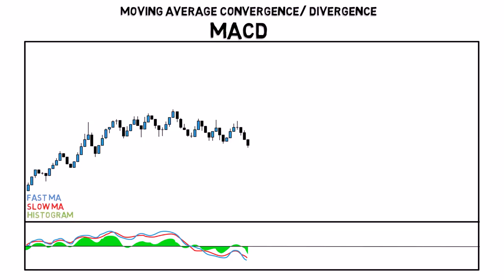A histogram that shows the difference between the two moving averages, and a zero line.